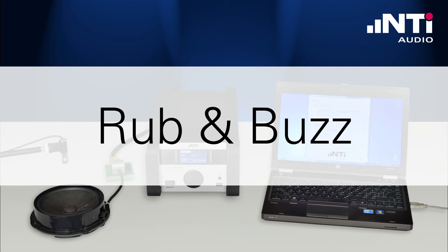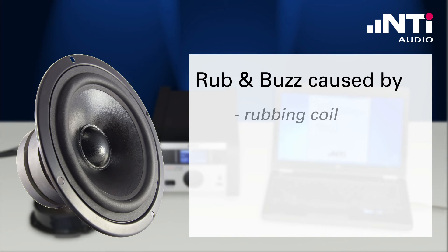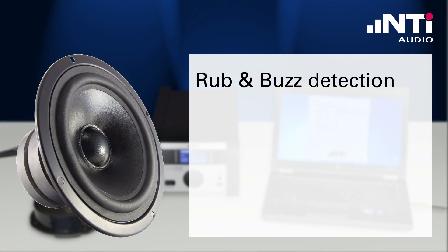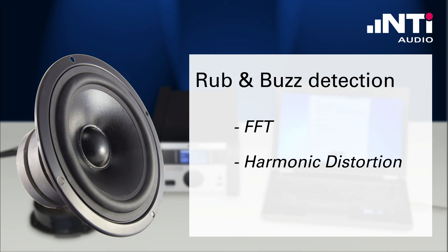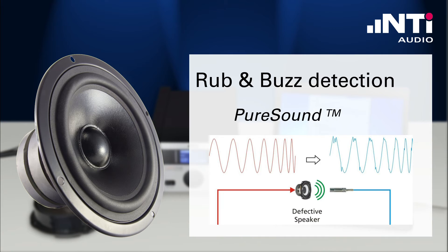One of the most important measurements in loudspeaker QC is rub and buzz. Rub and buzz is a term that summarizes all kinds of audible electromechanical defects on a loudspeaker — for example a rubbing coil, a touching wire, an air leakage, or a particle in the loudspeaker. Most measurement systems choose FFT or harmonic distortion for detection, however this is a poor method that does not provide significant distinction between good and faulty loudspeakers. We at NTi Audio utilize a more sophisticated approach: our analyzer looks for transients in the signal and runs them through a series of filters that simulate the perception of the human ear.